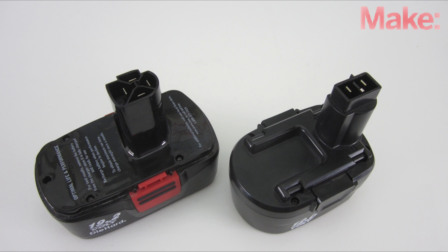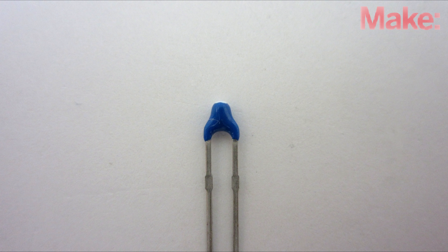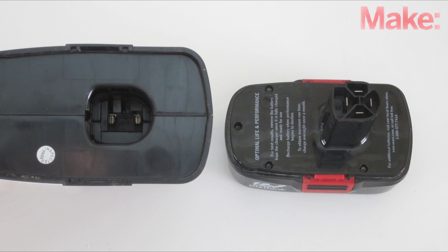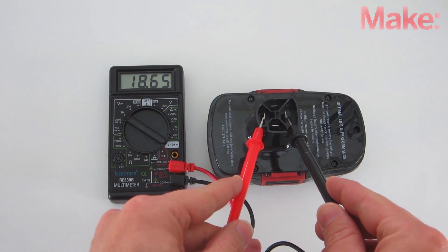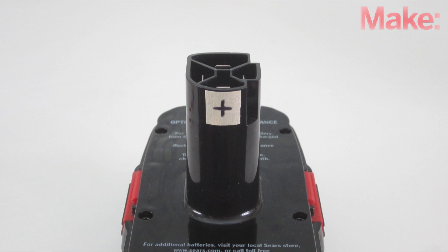The first thing that you need to do is take note of the connections on your battery. Two of the connections will be the positive and negative terminals. Any additional terminals may be for a temperature sensor or a thermal fuse. You can identify the positive and negative terminals by checking to see which ones connect to the power tool. Then use a multimeter to determine which one is positive and which one is negative. Label these for future reference.